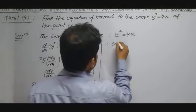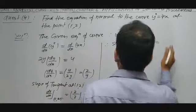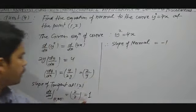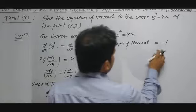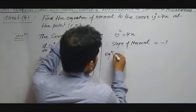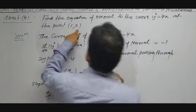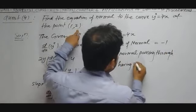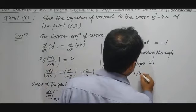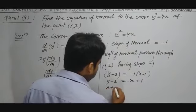Therefore, slope of normal: the product of slopes of tangent and normal equals −1. So slope of normal = −1/1 = −1. The normal passes through the point (1, 2) with slope −1. Equation: y − 2 = −1(x − 1), which gives y − 2 = −x + 1, so x + y = 3.